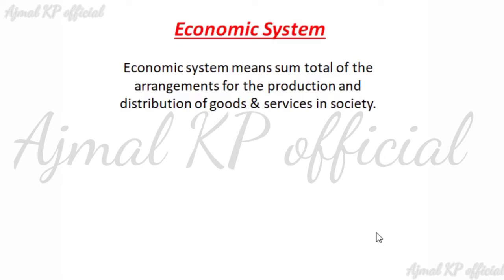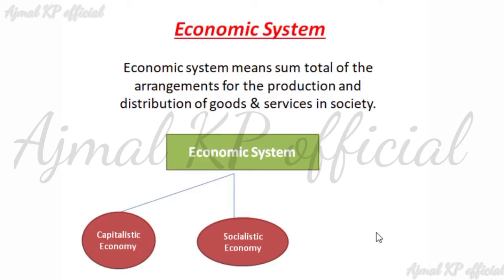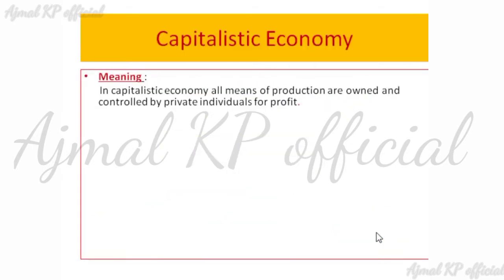Economic system means the sum total of the arrangements of the production and distribution of goods and services in society. The economic system can be classified into three: Capitalist, Socialist, and Mixed Economies. So first we can discuss about the capitalist economy.